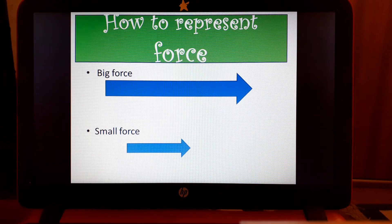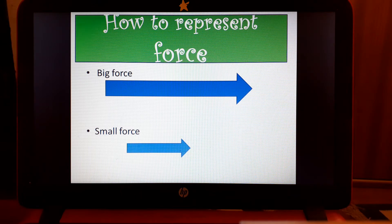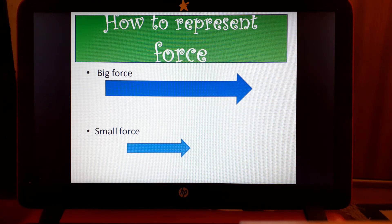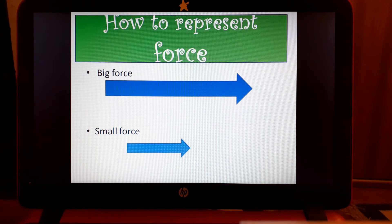If you have a big force it would look like this; if you have a small force it would look like this. The length decides the amount of the force, not the size of the arrow. When you draw an arrow, don't worry about the size of the arrow, just worry about the length. Longer means bigger force, shorter means less force, and the direction: left, right, up or down.